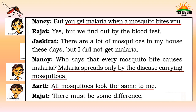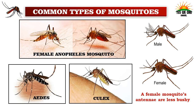Where did the malaria germs come from? Nancy said mosquitoes spread malaria. Jaskirat had many mosquitoes at home but didn't get malaria. Nancy clarified that not every mosquito bite causes malaria — malaria spreads only by disease-carrying mosquitoes. Aarti said all mosquitoes look the same. Though all mosquitoes look the same to us, they are actually different. Here are some common mosquitoes.